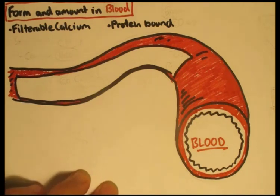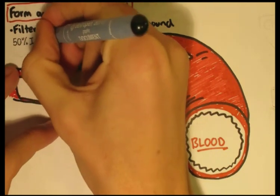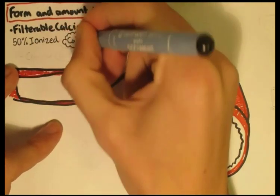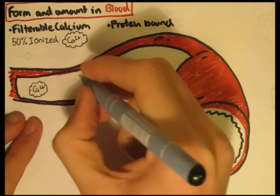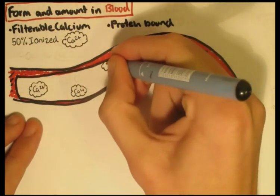Filterable calcium has two other types. About 50% of the total calcium found in the body is known as ionized calcium, and this is the physiologically active form of calcium. This is the one you see in nerve conductions and calcium channels in the cell membrane. It is depicted as Ca2+.